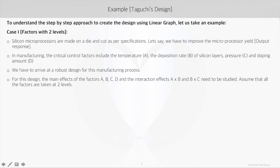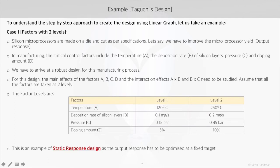In addition to the main effects, we also want to understand how temperature and pressure interact with the deposition rate, so we need to study the interaction effects between factors A and B, and B and C. The factor levels table summarizes the chosen levels — for example, temperature (factor A) has its minus-one level at 120°C and its plus-one level at 250°C. The choice of these factors is a critical and significant part of Taguchi's design process, and all subject matter experts for the process must be part of this decision.